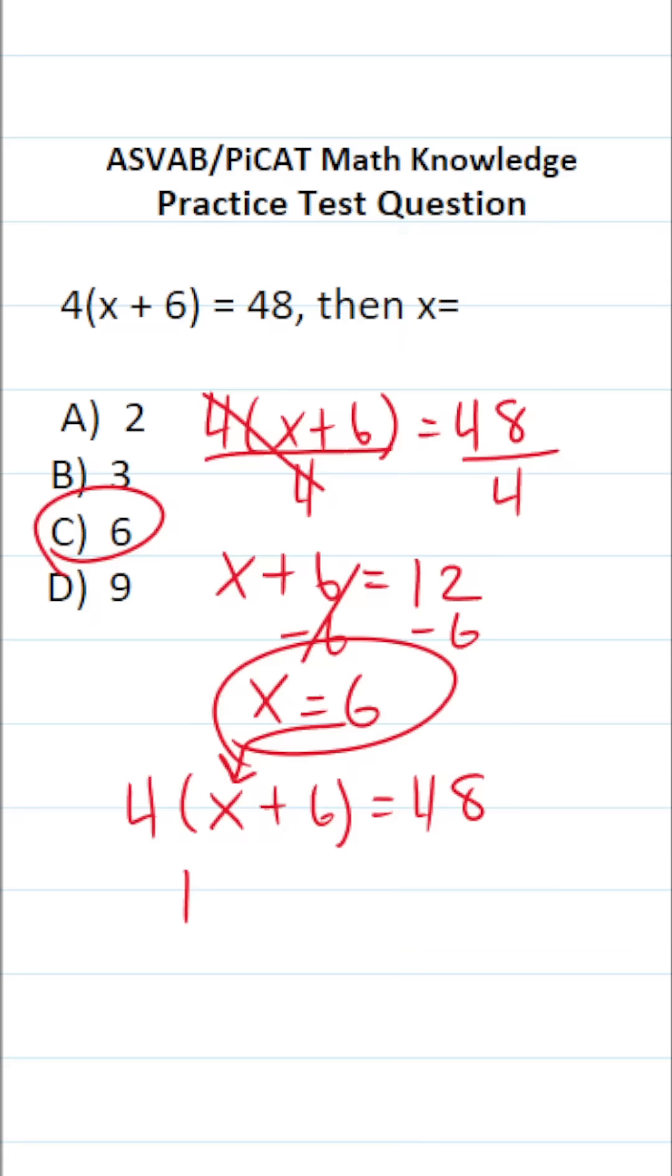And if this makes a true mathematical statement, we know we did our work correctly. So this becomes 4 times 6 plus 6 equals 48. 6 plus 6 is 12, equals 48. 4 times 12 is 48. Since 48 does equal 48, I'm confident that 6 is the correct answer to this one.